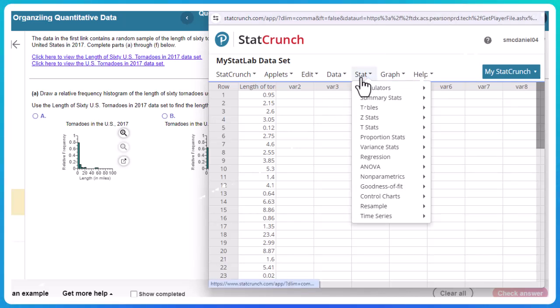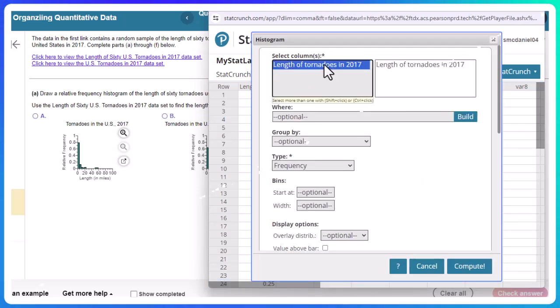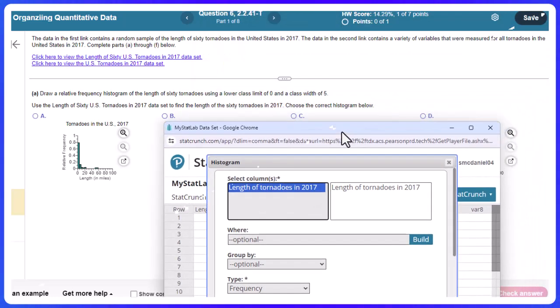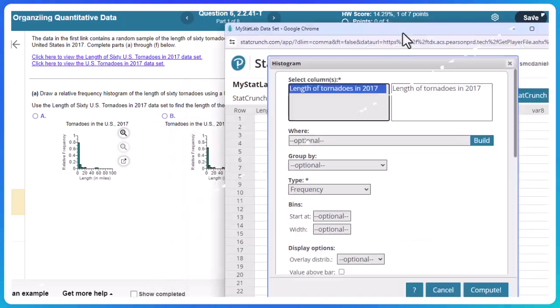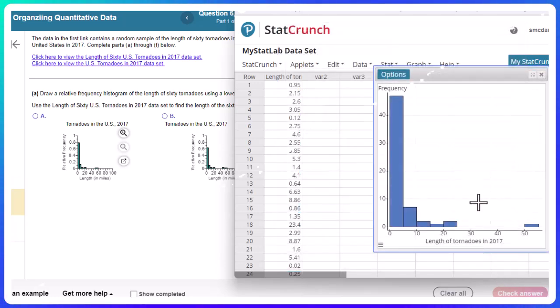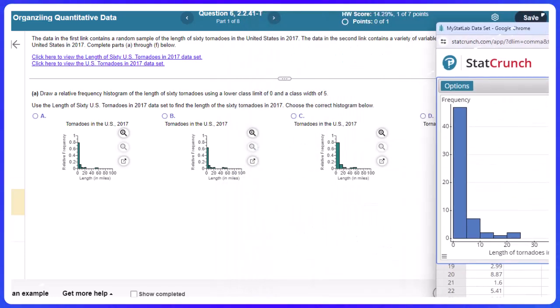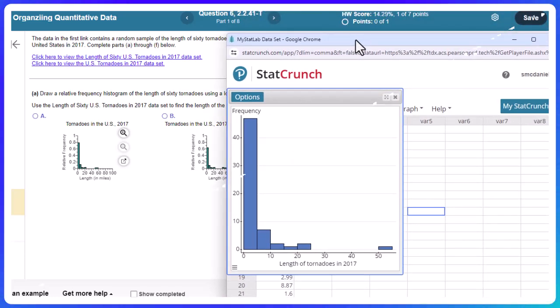Okay, so now let's go and do a histogram. So graph histogram, length of tornadoes, and it did give me a limit of lower class of zero and a width of five. Now normally I just take the defaults on this, but since it gave these two, I want to do that to allow us to match everything up. Okay, here's what it looks like.